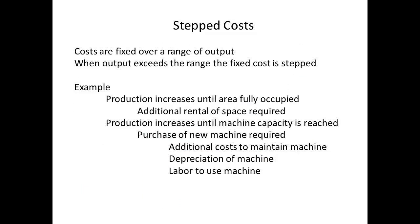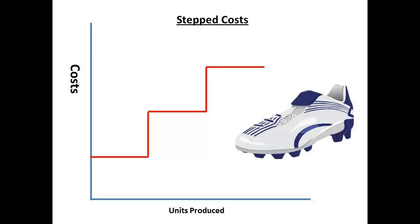There are situations where fixed costs may alter. If space becomes a limiting factor in production, there will be a point where fixed costs will suddenly increase by the need to rent more space. If capacity is determined by machine availability, exceeding that capacity will mean the purchase of additional machines, giving rise to additional fixed costs in terms of depreciation and maintenance, as well as additional labour costs. Where fixed costs alter in this way, they are termed stepped costs, because they increase by a single amount and then remain fixed until another increase is required.